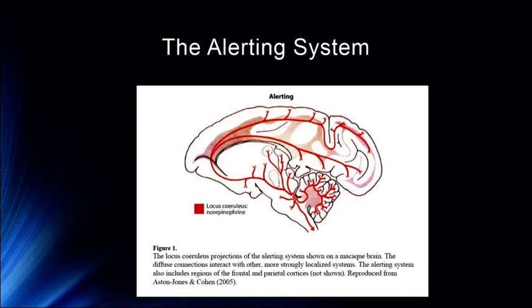Looking at the alerting system, the locus coeruleus projections are shown here in a macaque brain. They interact with more localized systems but include regions of the frontal and parietal cortex, reaching up from the subcortical systems throughout the cortex. This is generally how the alerting system works — coming from subcortical systems upward to affect our attention and influencing the other systems as well.